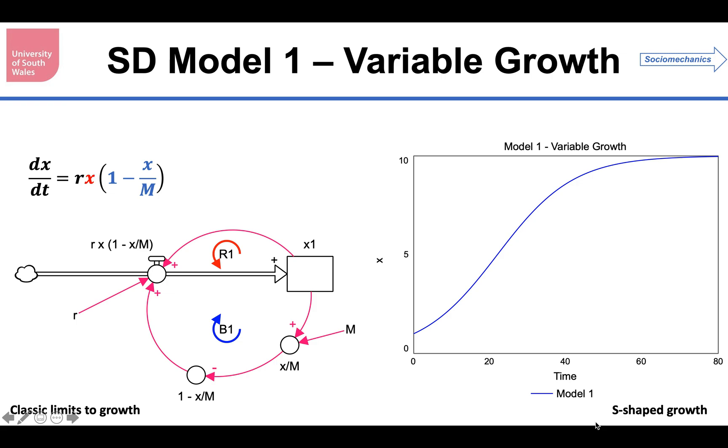You usually see this in system dynamics expressed as the classic limits to growth model. There is a reinforcing loop R1 associated with the term rx, which is in blue, and the minus x over m is the negative link on this converter here. I've put all the formula that make up this equation in on the converters and the flow of the stock flow model. It's the classic limits to growth, S-shaped. The reinforcing loop R1 dominates in the accelerating phase and the balancing loop B1 dominates in the decelerating phase.